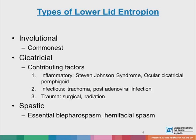What are the different types of lower lid entropion? Involutional is the most common, followed by cicatricial, for which contributing factors include inflammatory eye conditions like Stevens-Johnson syndrome, ocular cicatricial pemphigoid, infectious causes like trachoma and post-adenoviral infection, as well as trauma due to surgery or radiation. We also have spastic lower lid entropion, which can be classified together with essential blepharospasm or hemifacial spasm.